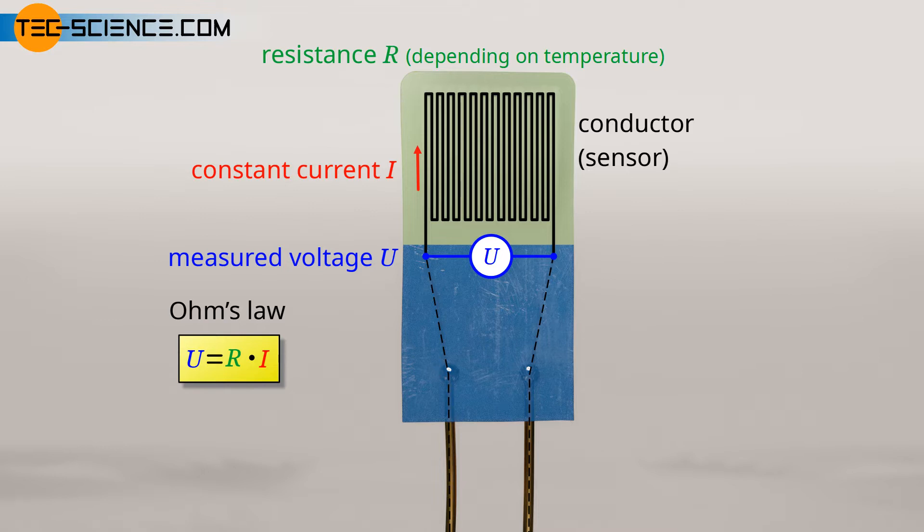Using this measured voltage, Ohm's law can therefore be used to calculate the resistance, which is directly a measure of the temperature. The higher the resistance, the higher the temperature.